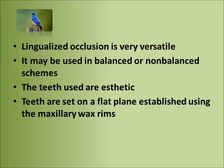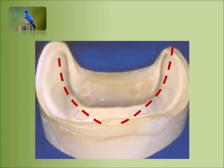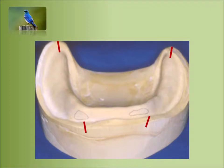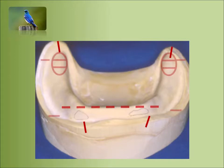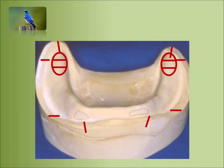The mandibular teeth are usually monoplane or semi-anatomic. The teeth are set on the middle of the ridge, with the entire occlusal surface flat against the maxillary occlusal plane. Landmarks are placed on the cast denoting the middle of the ridge, position of the cuspid, and the retromolar pad. The retromolar pad is divided in two-thirds. The mandibular occlusal plane approximates a line running from the upper two-thirds of the pad to the incisal edges of the maxillary teeth.